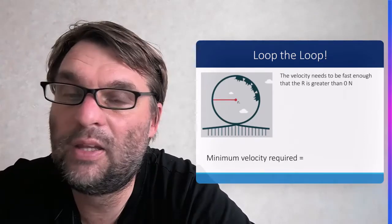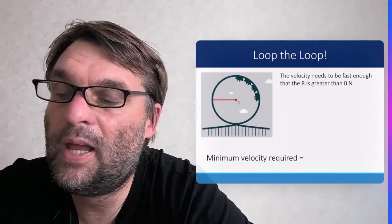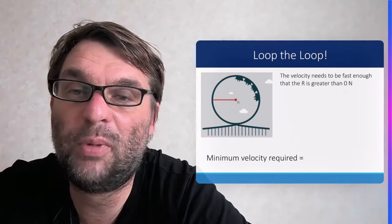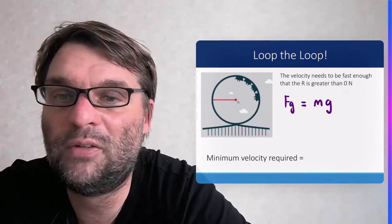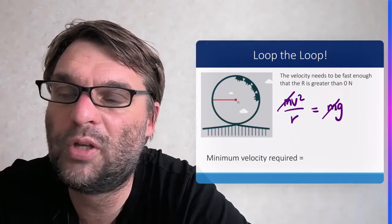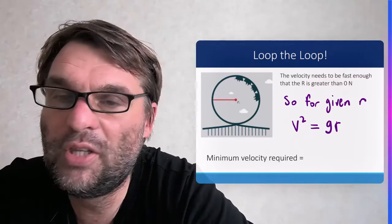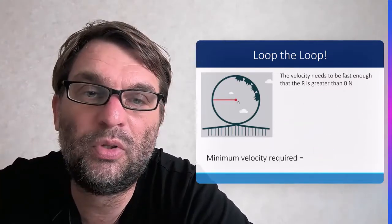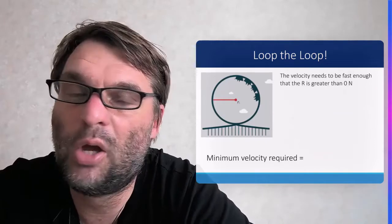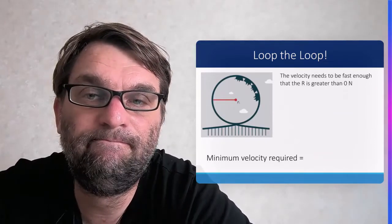We have an equation for centripetal force: Fc = mv²/r, and an equation for gravity from Newton's second law: Fg = mg. The masses cancel out, so the minimum velocity required for the loop-the-loop to occur is the square root of gr.